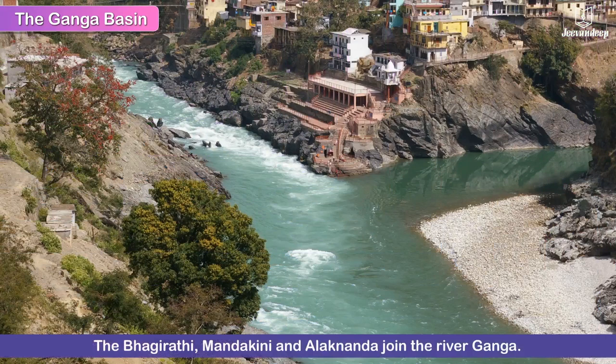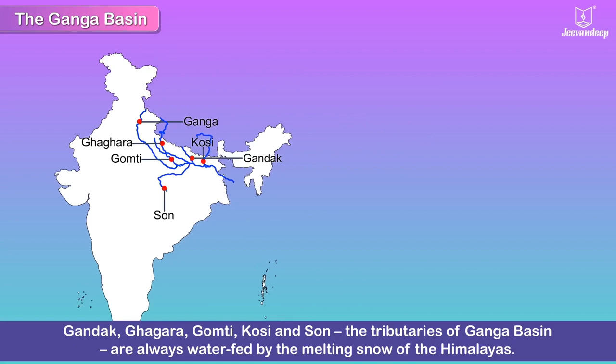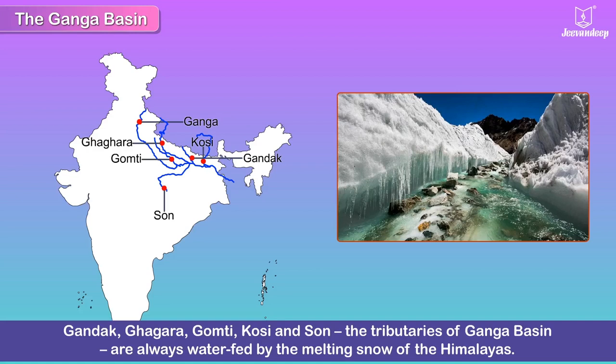The Bhagirathi, Mandakini, and Alaknanda rivers, along with smaller streams, join the Ganga on its downward journey before it reaches the flat northern plains. Its tributaries like the Gandak, Khaghur, Gomti, Kosi, and Soan are always water-fed by the melting snow of the Himalayas.